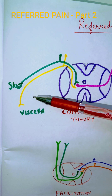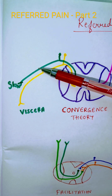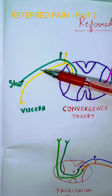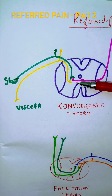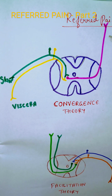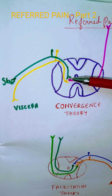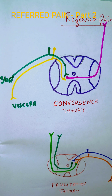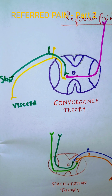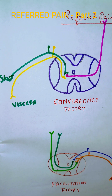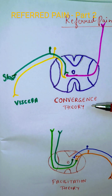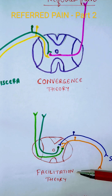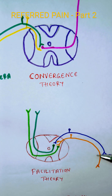To summarize convergence theory: two first order neurons come and end on a common second order neuron — they are all converging onto a single second order neuron. That is why this theory is widely accepted.